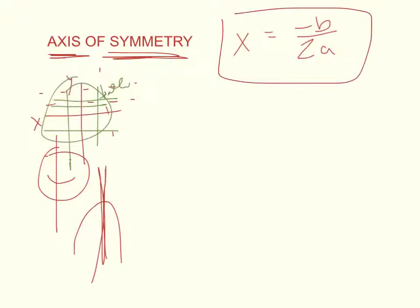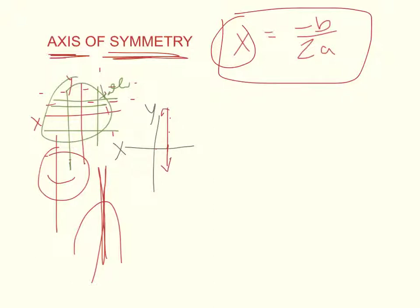Let's look at something before we get started. In our coordinate plane, we've got our y-axis and our x-axis. Whenever we do the axis of symmetry, we have it as x equals something. That means whatever the answer is — say x equals 2 — it's going to be over at 2, and it doesn't matter what the y is; it'll always be over 2. Therefore, it's straight up and down. If x equals negative 3, it's always going to be negative 3 for x, regardless of y. So your axis of symmetry is going to be a straight vertical line.